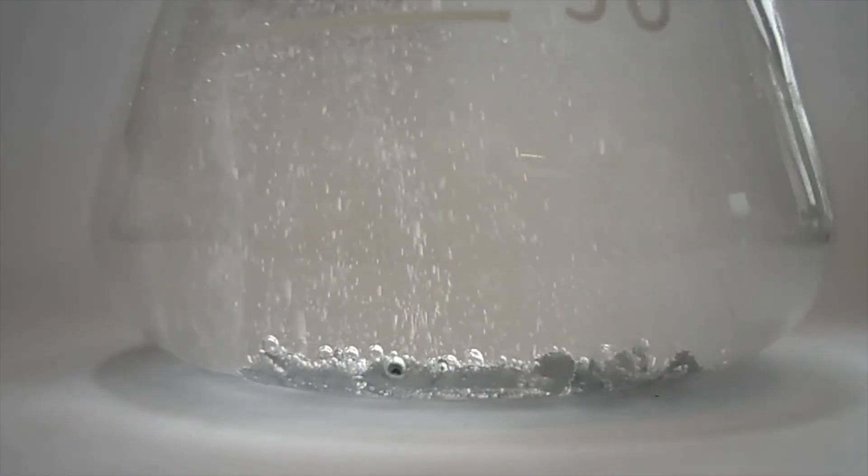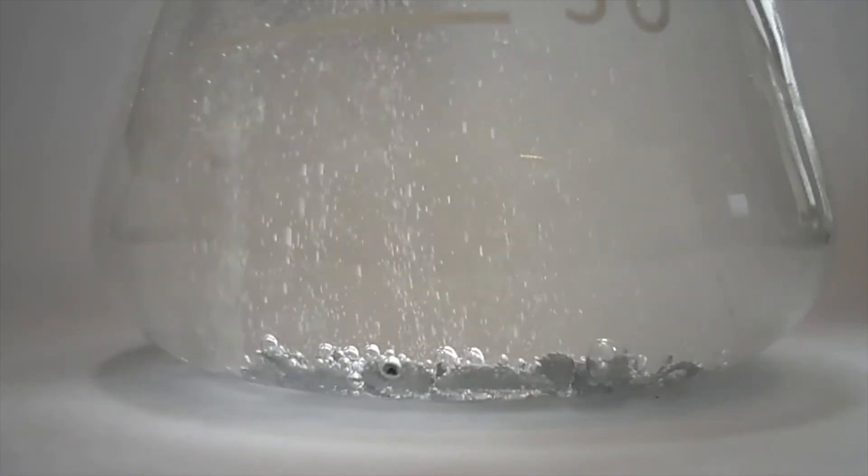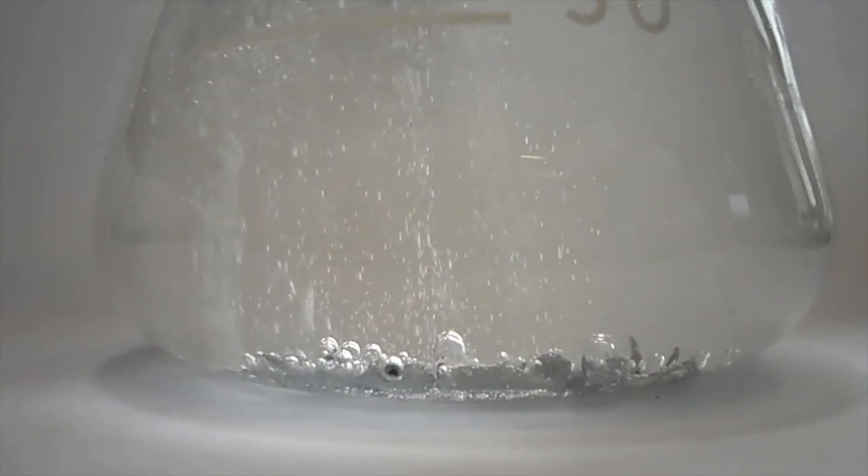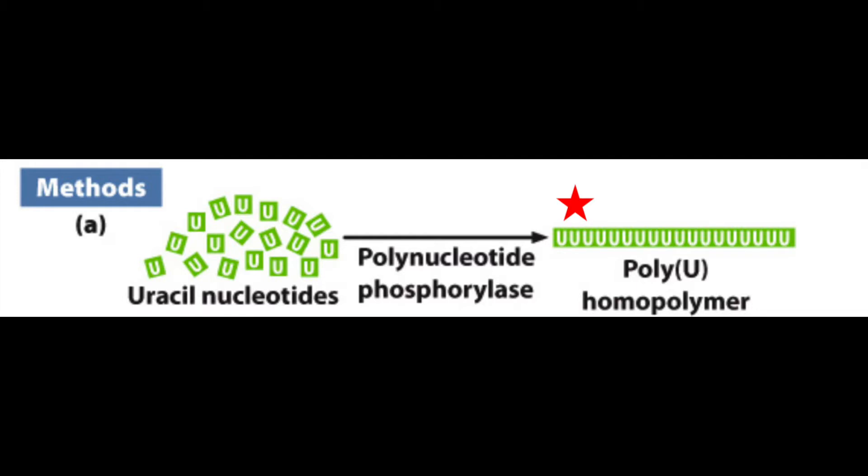They synthetically produced a poly-U homopolymer, which is a polymer where every monomer unit is the same. In this case, all uracil, or U. They accomplished this by taking uracil nucleotides and the enzyme polynucleotide phosphorylase, which does not require a template and will randomly link together any RNA nucleotides that are present.